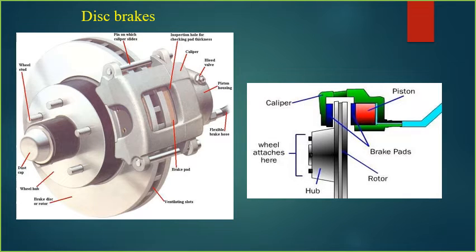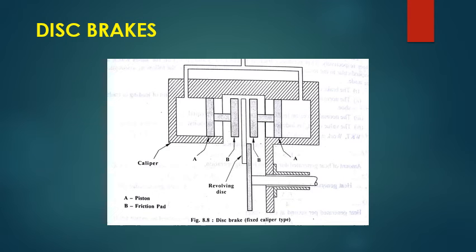The disc brake is an evolution from the drum brake. It has a disc connected to a rotor or wheel hub, brought to a stop by a caliper with brake pads. Instead of a drum, a disc is used. In a typical disc brake, a piston activates the friction pad toward the revolving disc. When the friction pad contacts the disc, the coefficient of friction brings the revolving shaft to a stationary position.